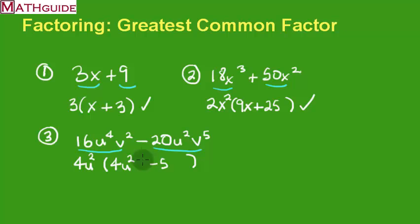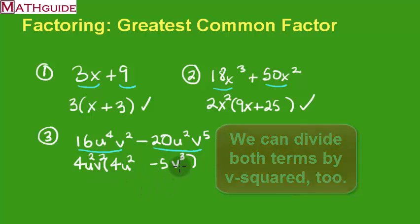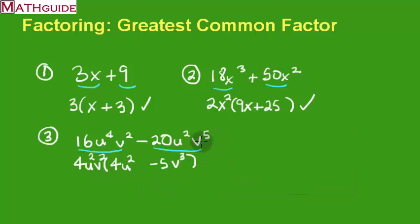Between v squared and v to the fifth, I can take out v squared. Then v squared times 1 gives v squared for the first term, and v squared times v cubed gives v to the fifth for the second term. These two terms have no letters and no numeric factors in common, so I am done.